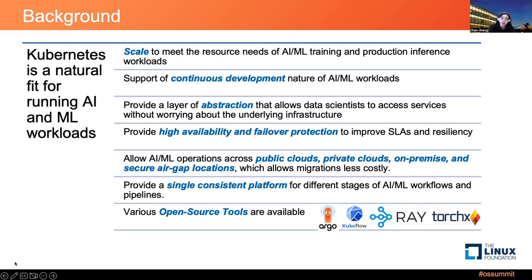It also allows you to operate your AI and machine learning workflows across different clouds including public clouds, private clouds, on-premise data centers, and even secure air gap locations, making migration costs less costly. It can provide a single consistent platform for different stages of your pipelines. Various open source frameworks are available running on Kubernetes including Argo, Kubeflow, Ray, TorchX, and others.